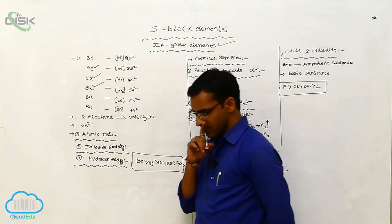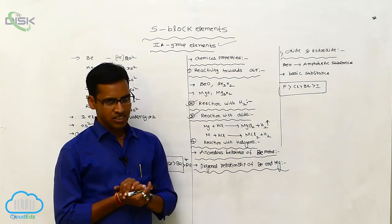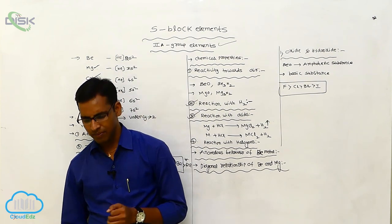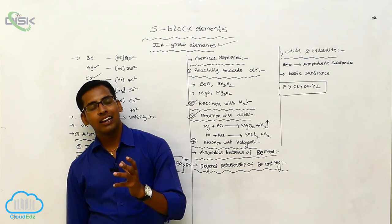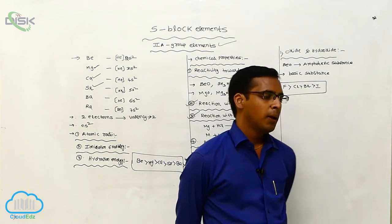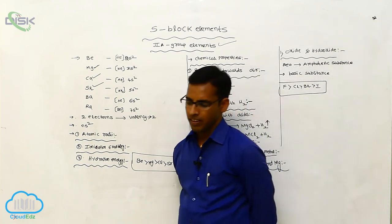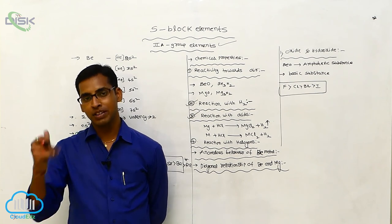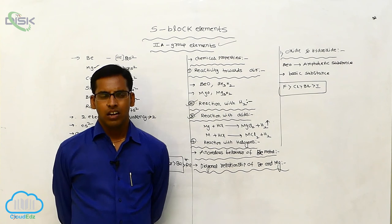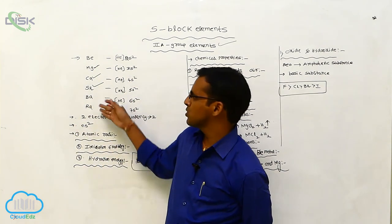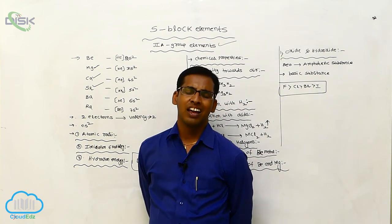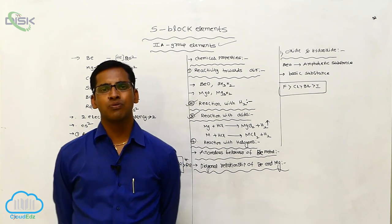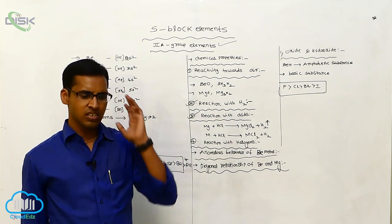The last topic in s-block elements is the uses of Group 2A elements. Beryllium is used in the preparation of alloys. Magnesium is used in the preparation of aircraft materials. Some of the metals are also used in the preparation of photoelectric and electrochemical cells. These are the uses of secondary group elements.